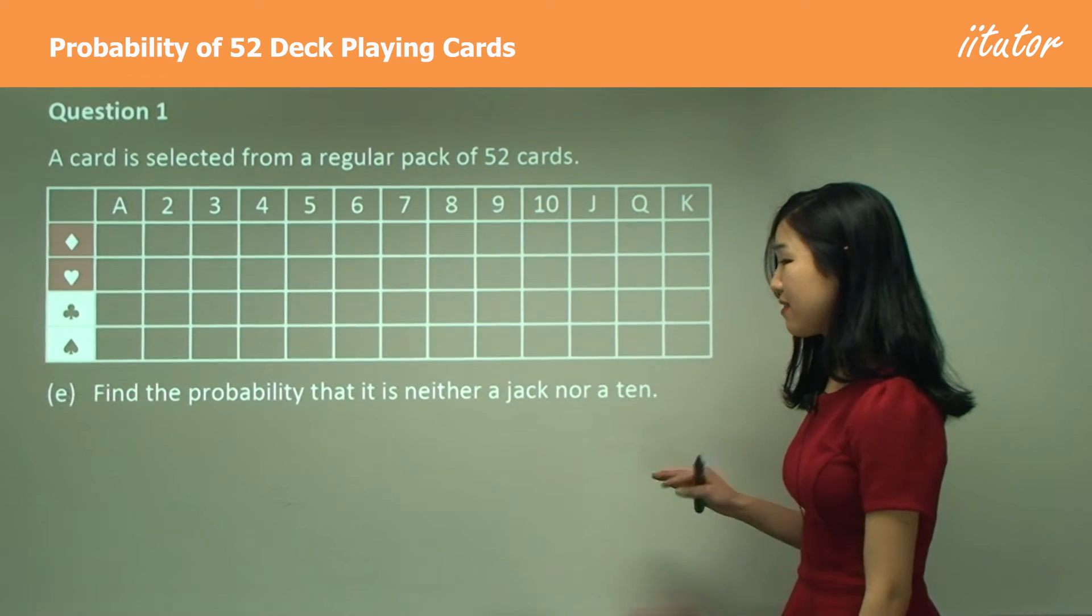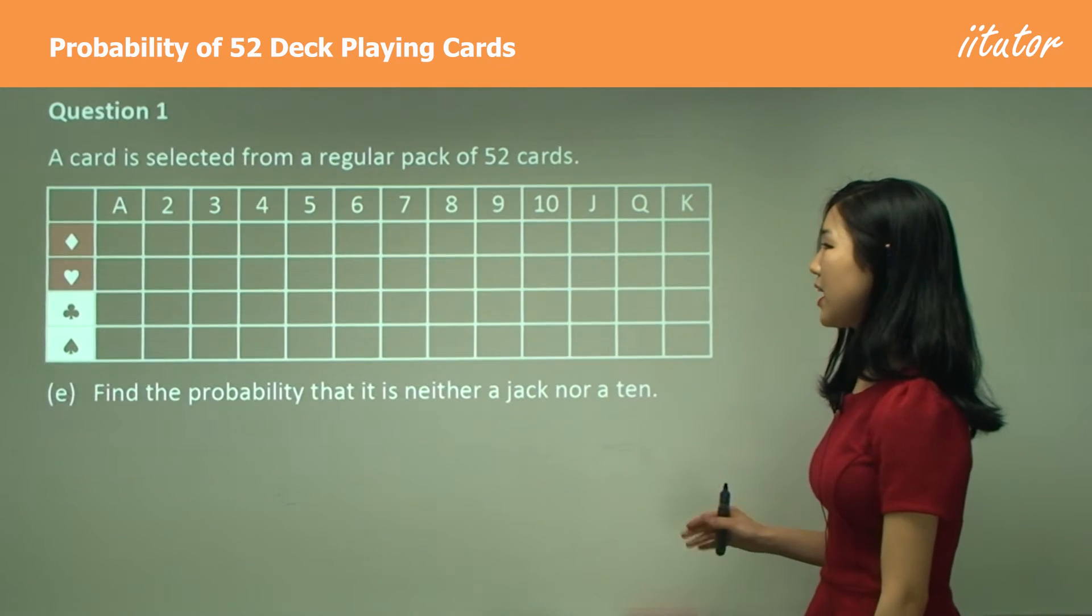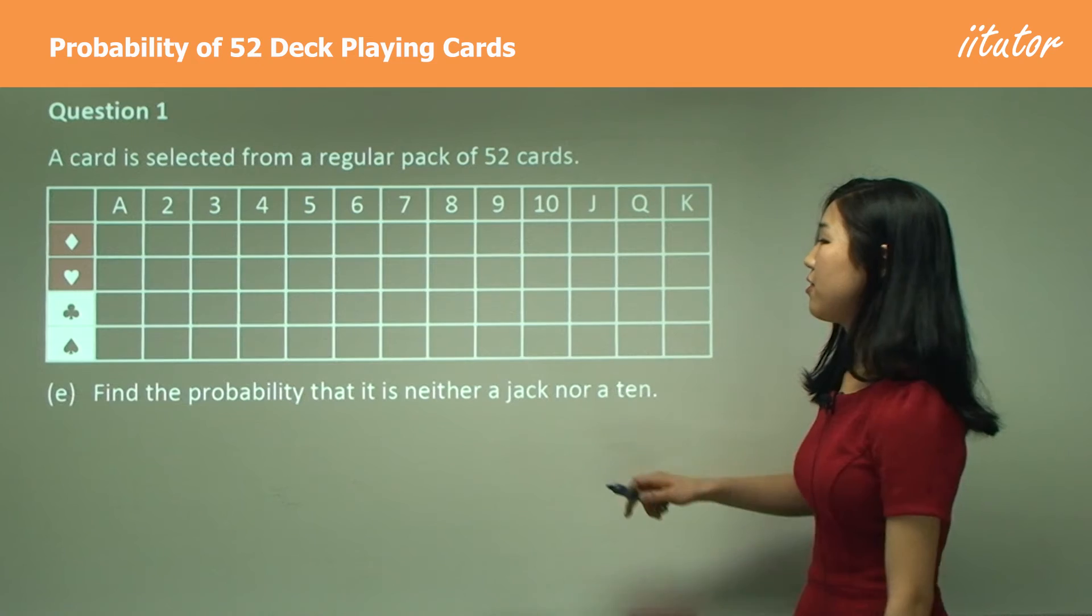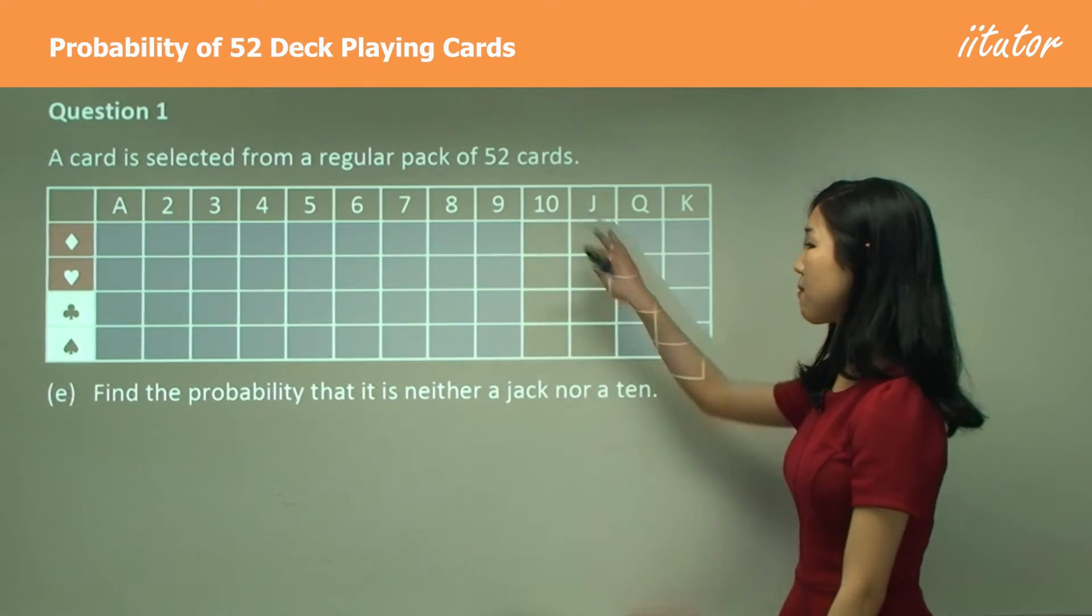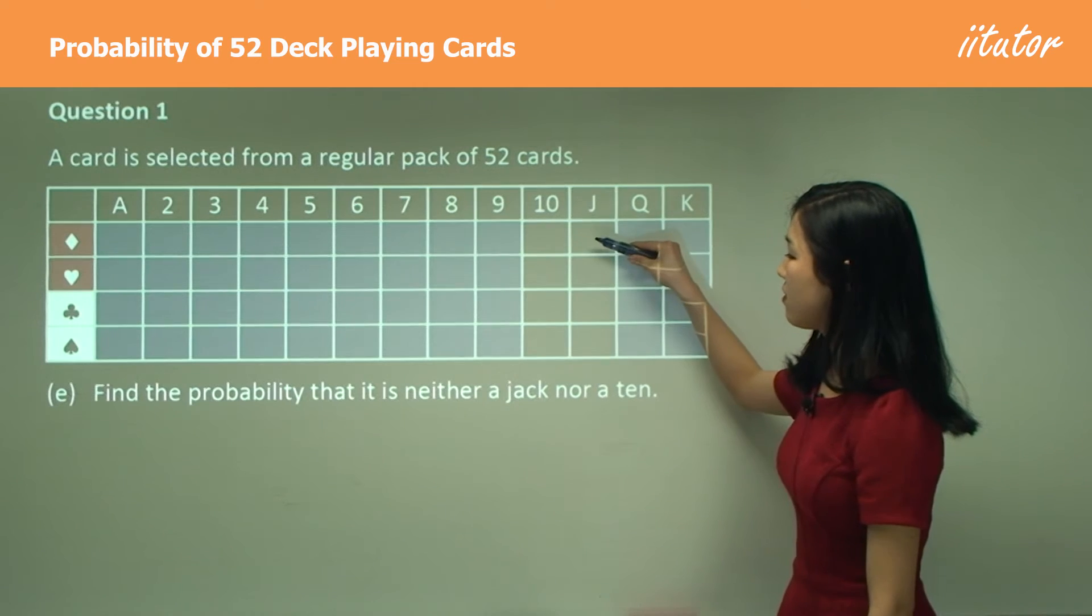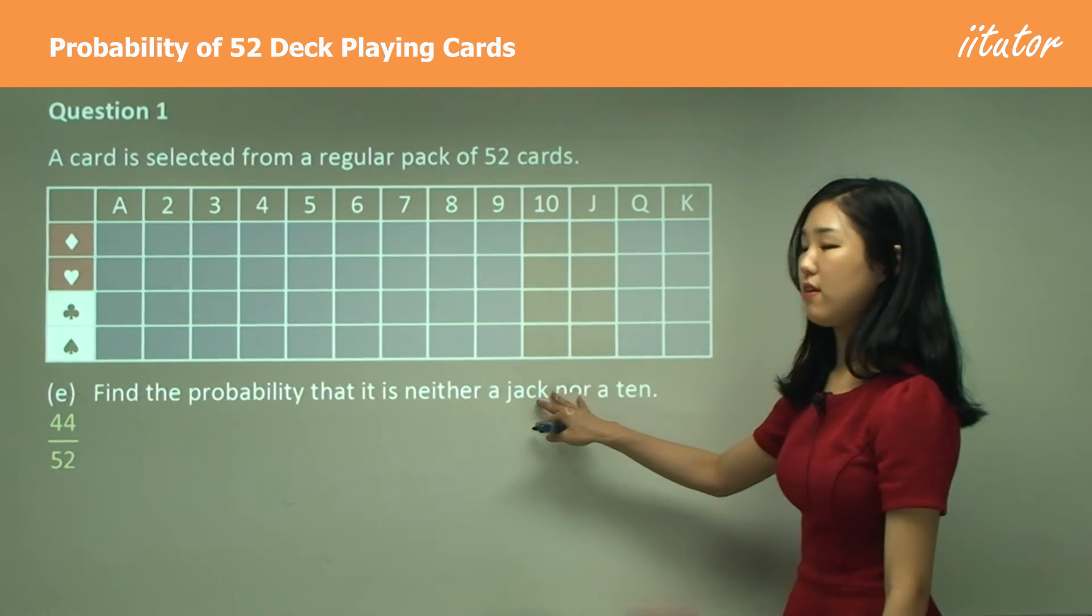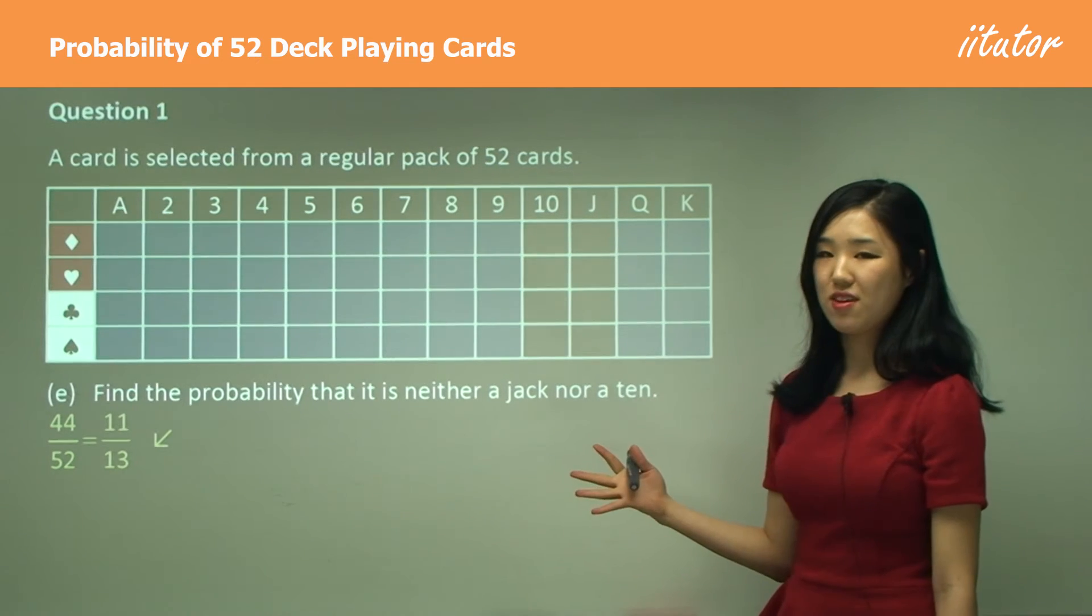Part e: Find the probability that it is neither a Jack nor a 10. Neither a Jack nor a 10 means we don't want it to be a Jack or a 10, so it must be anything else, excluding these two outcomes. It's 52 minus 8, which is 44. So 44 out of 52 is the answer for this question, simplified to 11 over 13.